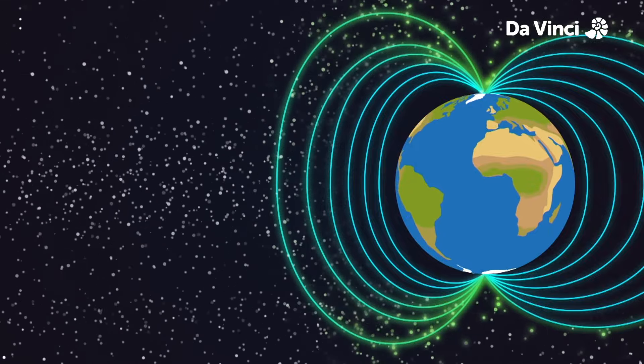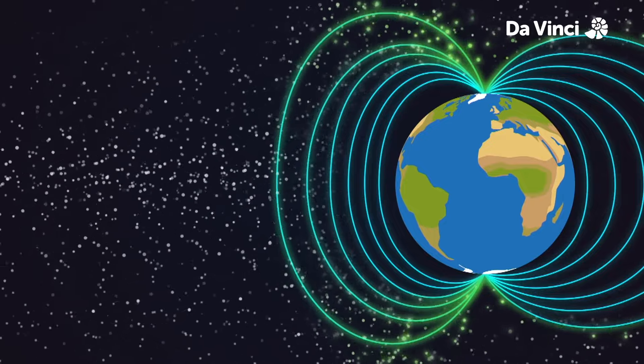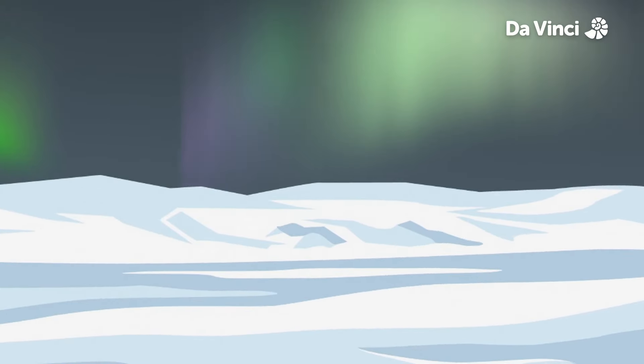When they hit the magnetic field, they may start to glow. These green glowing particles are the polar lights you can see in the sky around the poles.